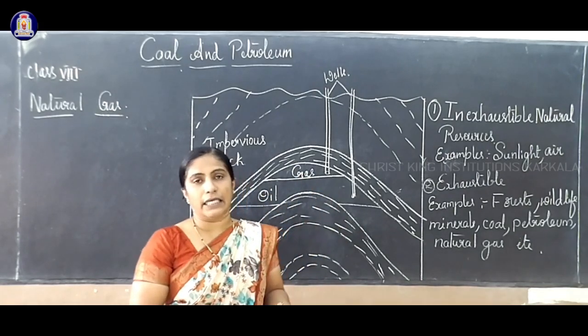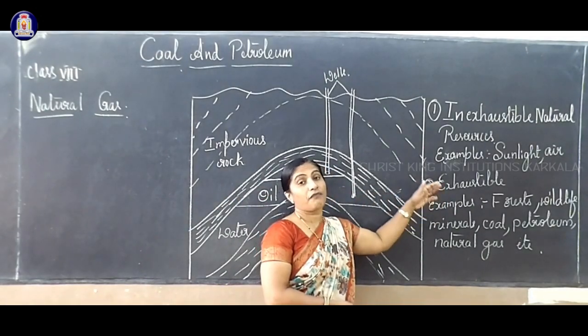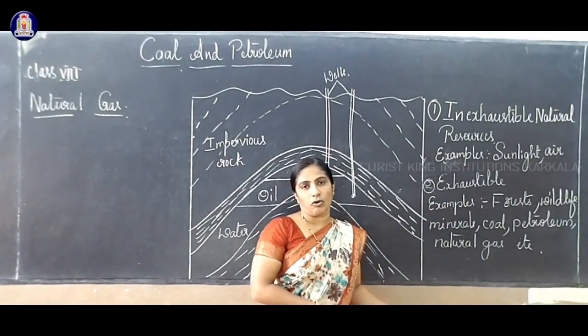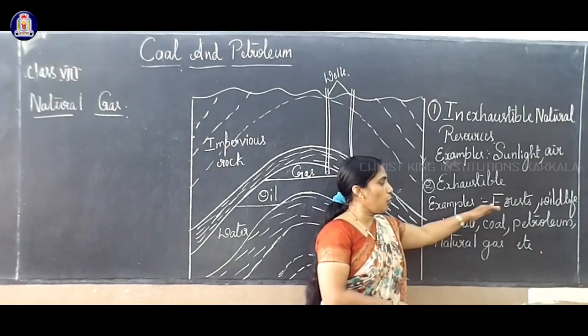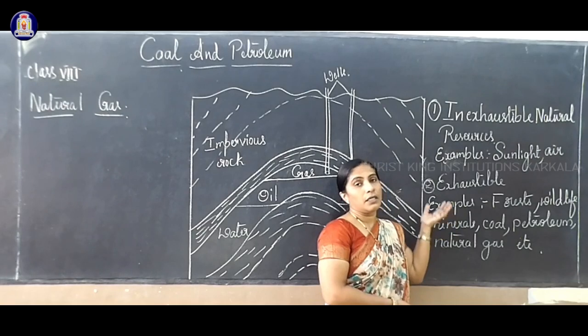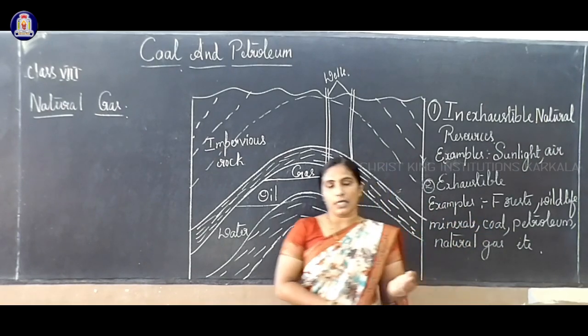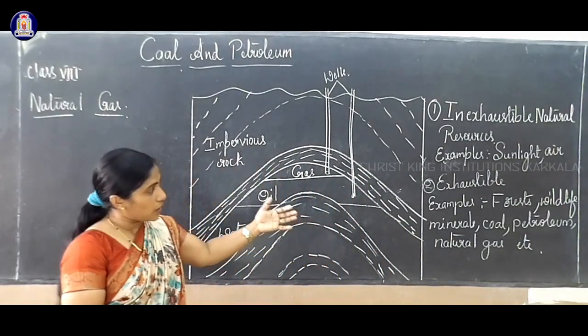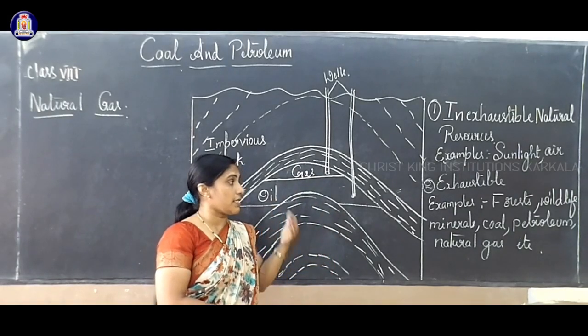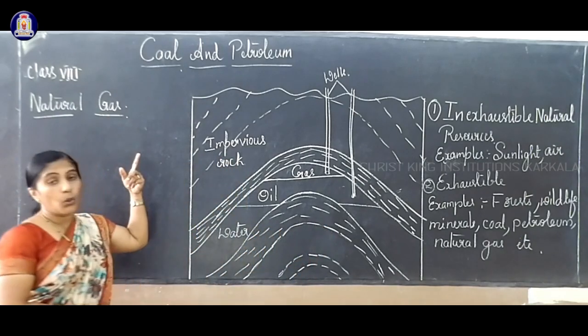Once it depletes, it takes billions of years. For example, forest and wildlife - you already studied conservation of forest. If there is no tree, what are the consequences for human beings? Limited wildlife, minerals, coal, petroleum and natural gas. In exhaustible resources like coal, petroleum and natural gas, we are studying coal and petroleum.